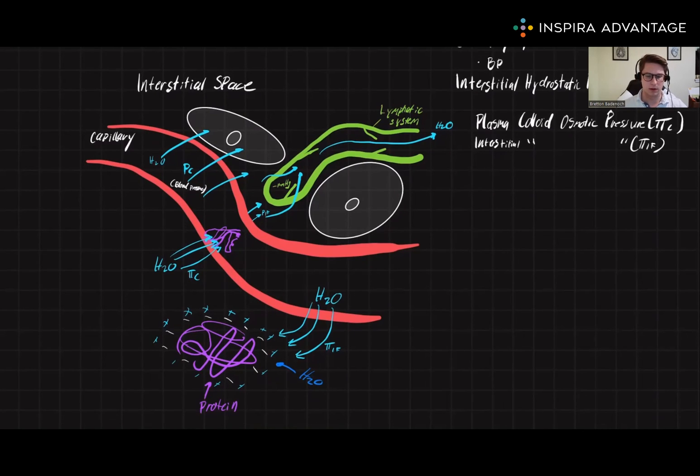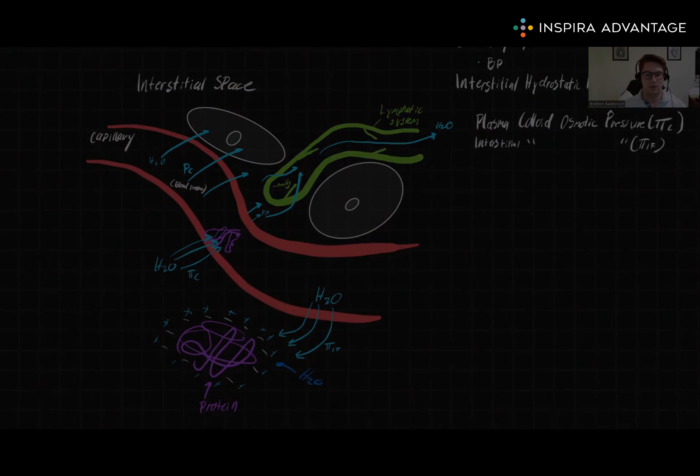That's what you should focus on. Protein causes water to move towards it. High blood pressure causes water to leave the capillaries into the interstitial space. And the lymphatic system sucks water out of the interstitial space and causes more water to move from the blood into the interstitial space.